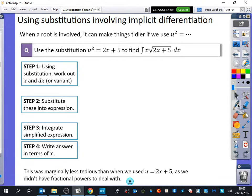This is exactly the same question that we have just done, apart from this time our substitution is going to involve implicit differentiation. When there is a square root involved, like there is here, it can make things tidier if we use a different kind of substitution.